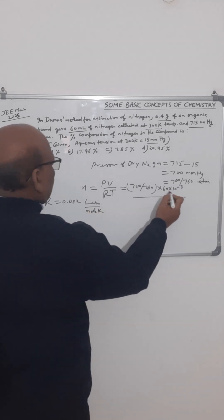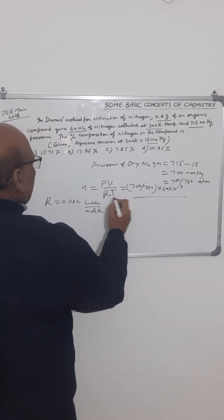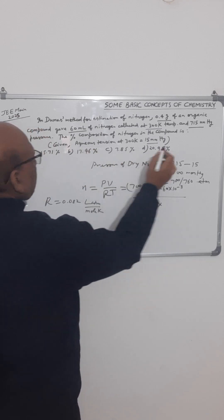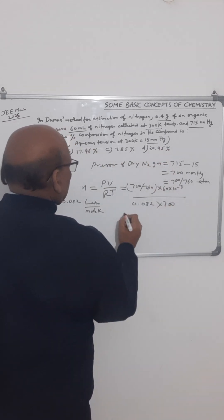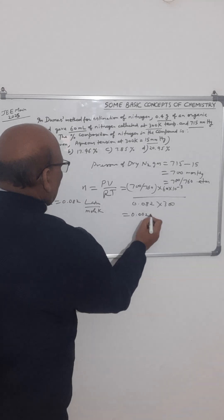That is why we have converted the units to liters - this volume in liters and the pressure in atmosphere. Divided by R, which is 0.082, and temperature, that is 300 Kelvin. So with this we can find the number of moles. This will be coming at 0.0023.